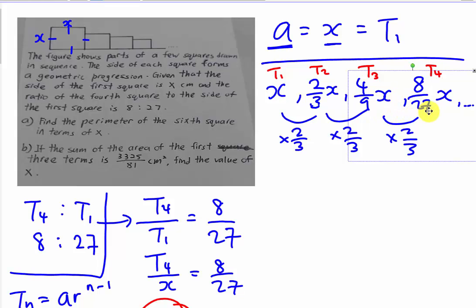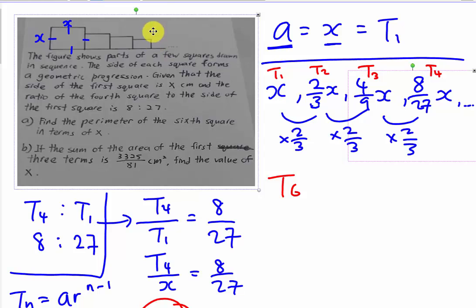The question asks you to find the perimeter of the sixth square. The sixth square means you have to find t6. When you find t6, you are finding the side of the square — not the perimeter yet. So you continue finding this. The square becomes smaller and smaller, so this might be t6. When you find t6, you only find the side of t6, because a square has 4 sides.